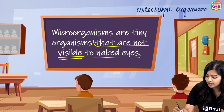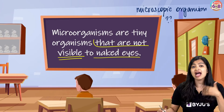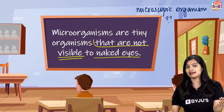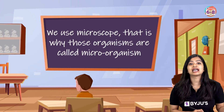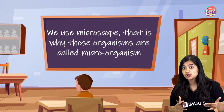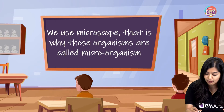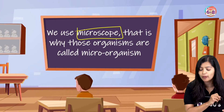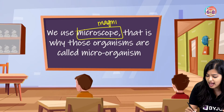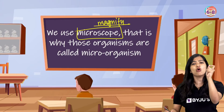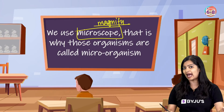Microscopic organisms is a very important term. The reason we call them that is because the instrument we use to observe them in close detail is called a microscope. The microscope will help you magnify and zoom and look closely so that you can actually observe these organisms.